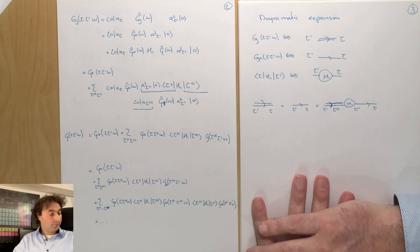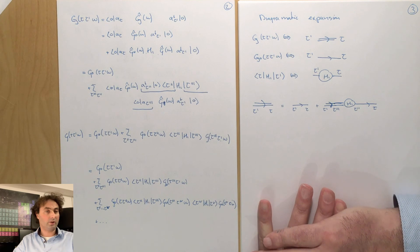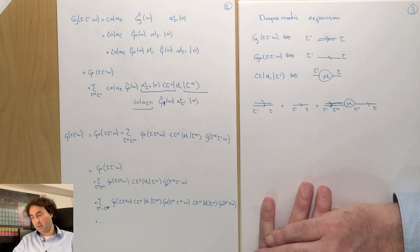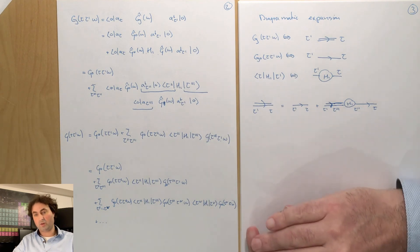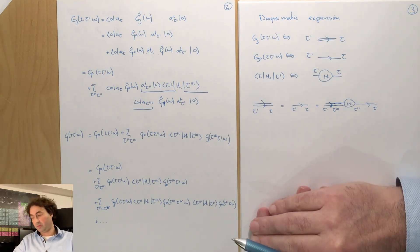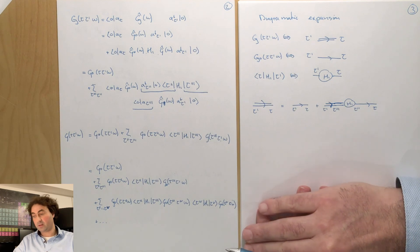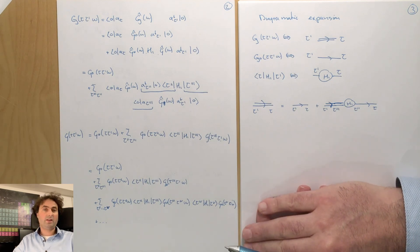Thank you very much for your attention. In the next lecture we will look at the example of a single impurity in a lattice and calculate the states and the deviations that you get because of the non-periodic impurity. Stay healthy — we'll see each other later.